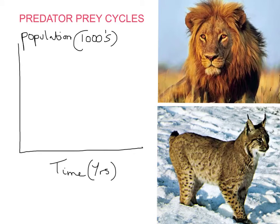So we're going to put in prey numbers first. We'll do this in red. And you get something that looks a little bit like this.